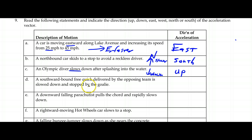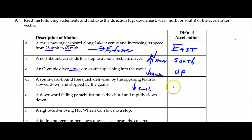A southbound free kick delivered by the opposing team is slowed down and stopped by the goalie. So the actual ball is moving to the south, and the goalie slows it down. That means the acceleration has to be opposite to south, so it has to be to the north.